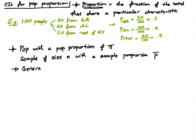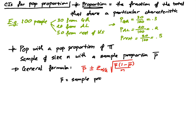Given this information, the general formula we're going to use is as follows: p-bar ± z sub α/2 times the square root of p-bar times (1 minus p-bar) divided by n. Here, p-bar is the sample proportion and n is the sample size.